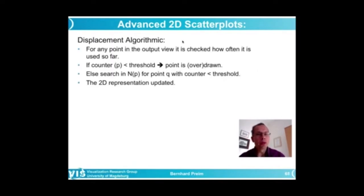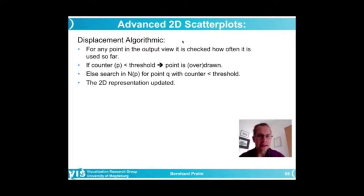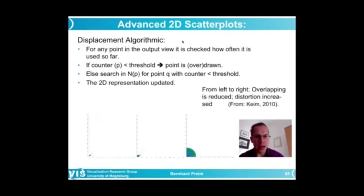For any point in the output view in the scatterplot, we check how often it is used so far. If the counter for a particular point P is below a threshold that was adjusted before, this point is drawn or overdrawn if it is not for the first time. If the threshold is exceeded, we search in the neighborhood — direct neighbors, or if this is not successful, even further neighbors — until we find a point Q in the neighborhood of P where the counter is below the threshold. Then the representation is updated accordingly.